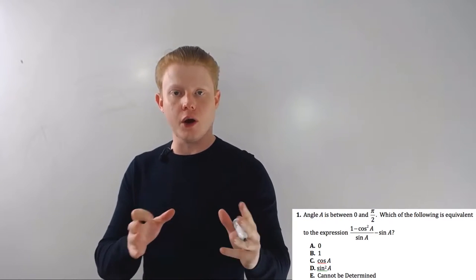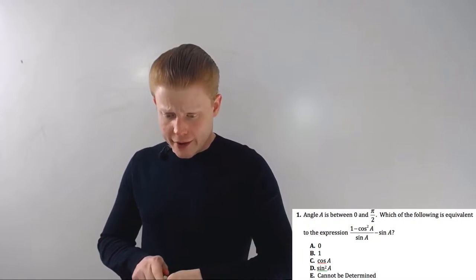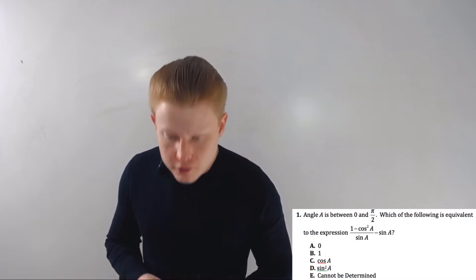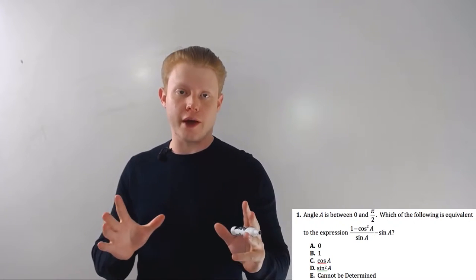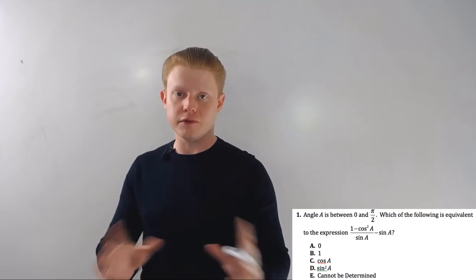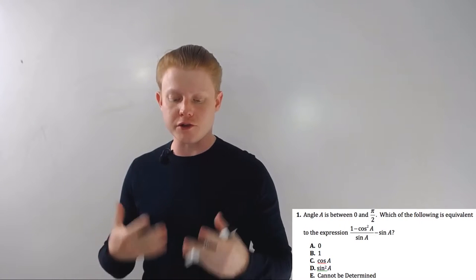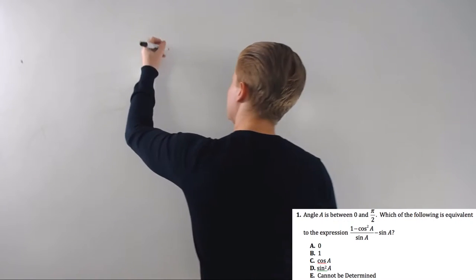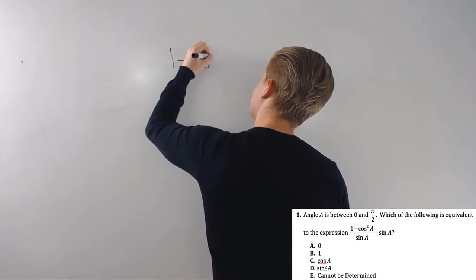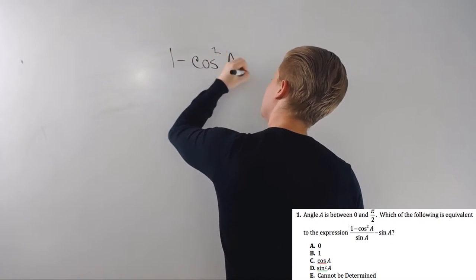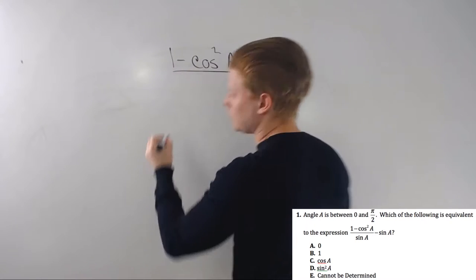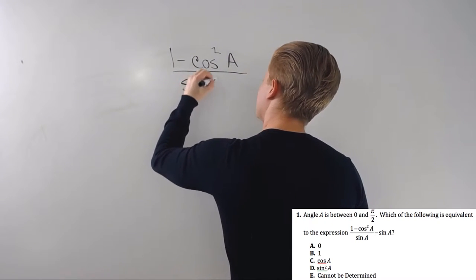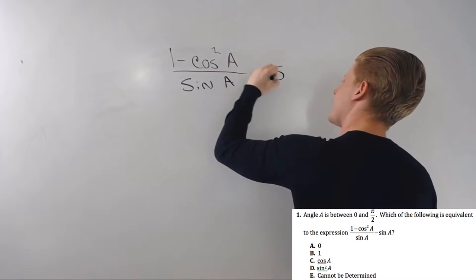So angle A is between 0 and pi/2—that just means it's an acute angle between 0 and 90 degrees, perfunctory information, we don't really need it. Which of the following is equivalent to 1 minus cosine squared angle A over sine of that same angle minus sine of that angle?